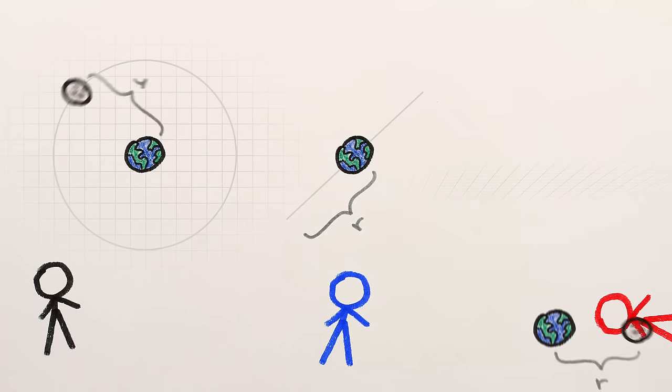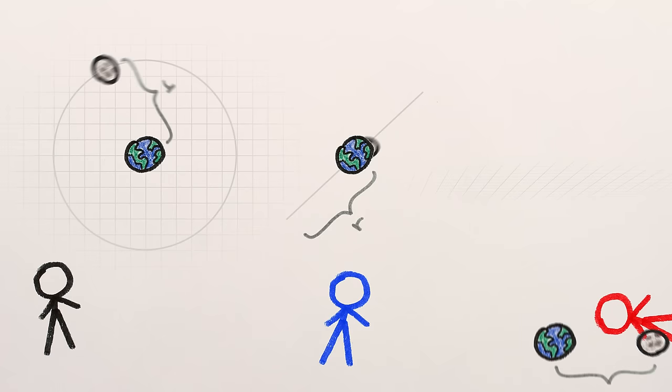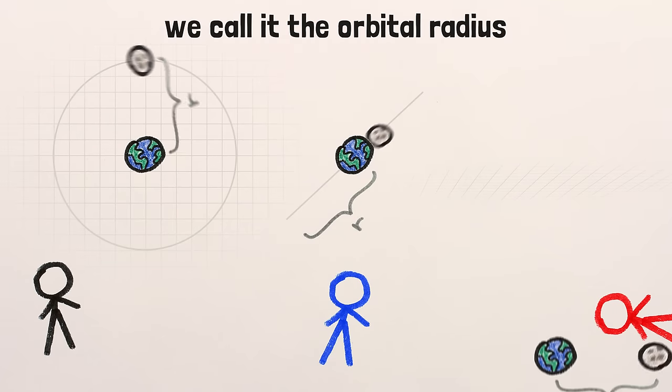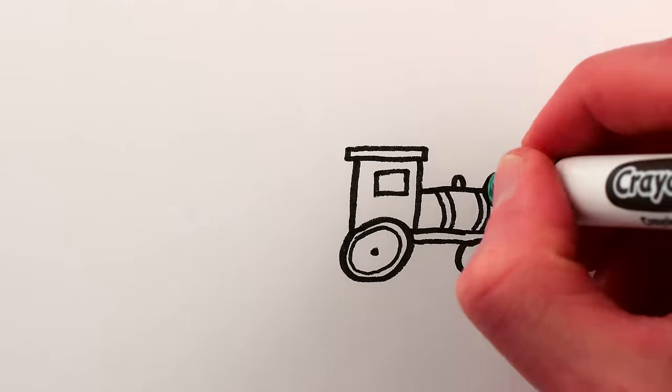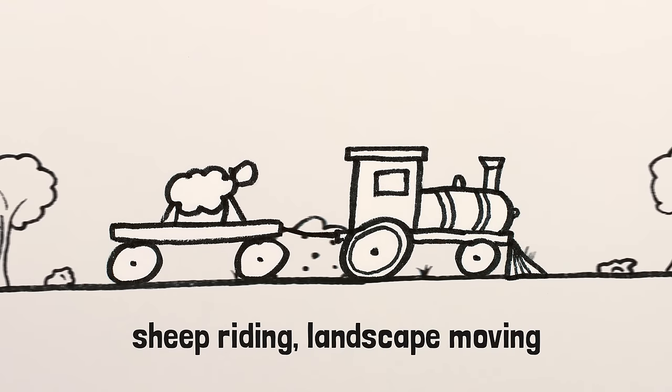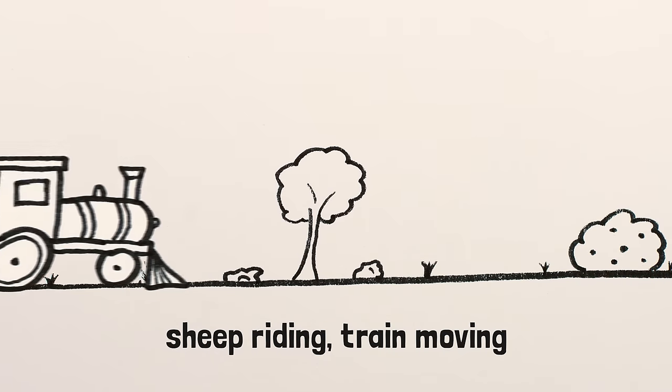So you might say, Aha! There's something that's independent of perspective. Maybe it's a fundamental property of the Earth-Moon system, and not just an artifact of my particular point of view. And this is why relativity is so important in physics. By studying what changes and what doesn't about a physical system when you change your perspective, you're zeroing in on universal truths.